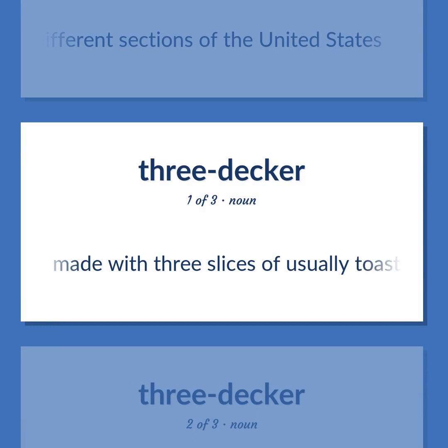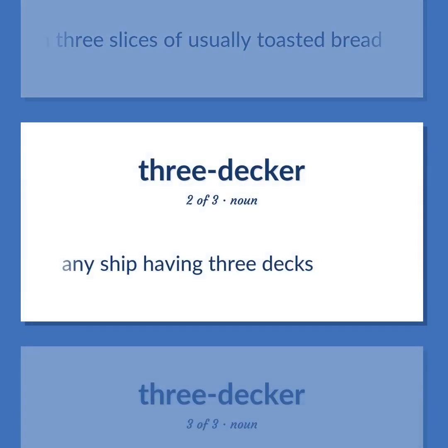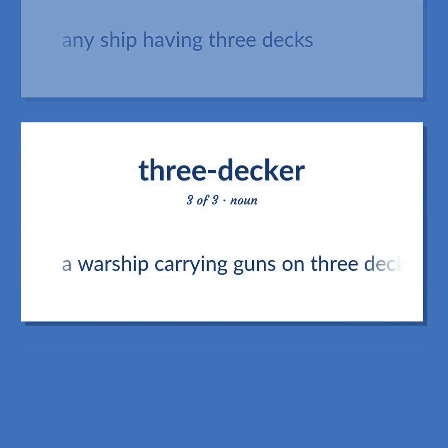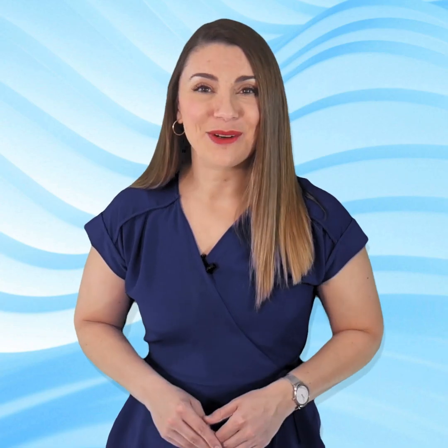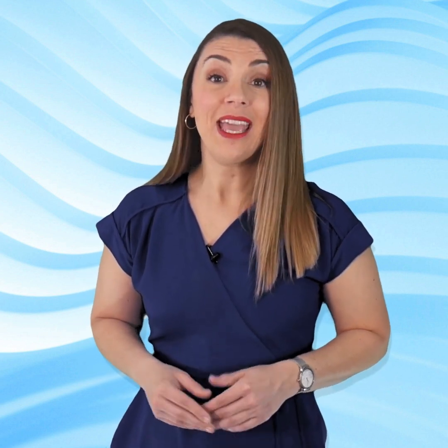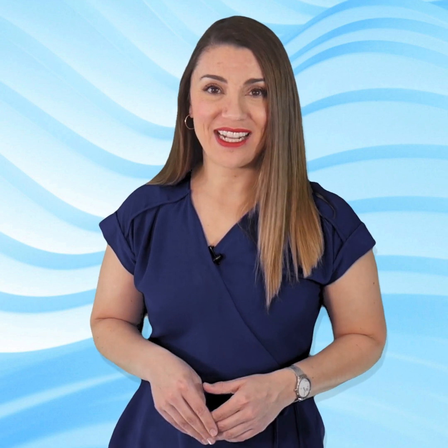Club sandwich: made with three slices of usually toasted bread. Triple-decker: any ship having three decks. Also: a warship carrying guns on three decks. Become our student and get access to effective and free educational materials. Subscribe to our YouTube channel to become a part of our growing community and to learn English effectively.